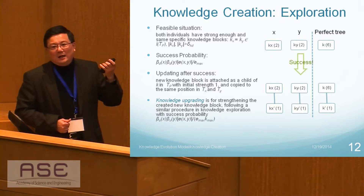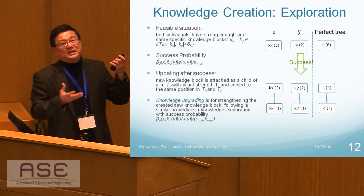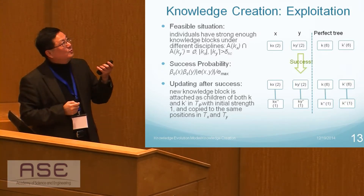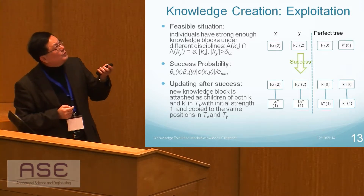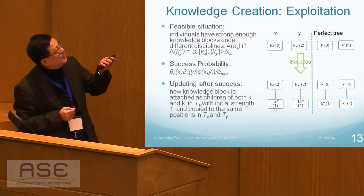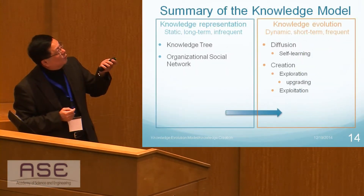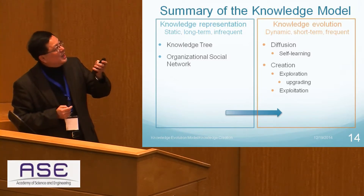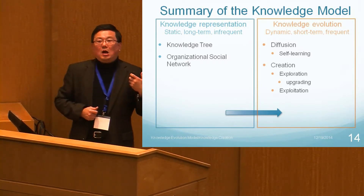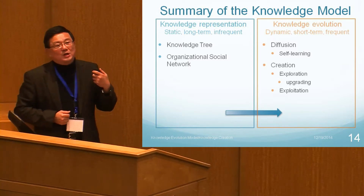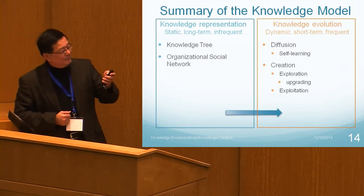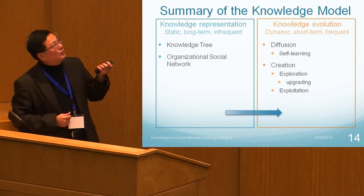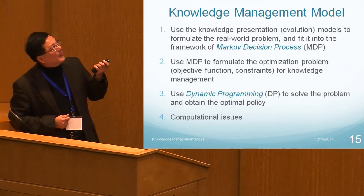There are different cases to consider at three levels: the personality level, scaling up to the personal knowledge level, then scaling up to the organizational knowledge level. That is the real complexity. Once we have created the knowledge tree for individuals and the organizational social network, and described how diffusion and creation of knowledge occur, the next step is to optimally manage the evolution of knowledge inside organizations. We use a Markov Decision Process to model the knowledge evolution problem.